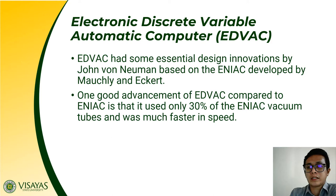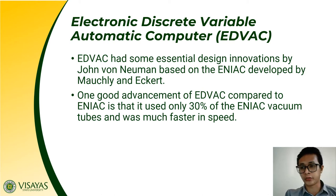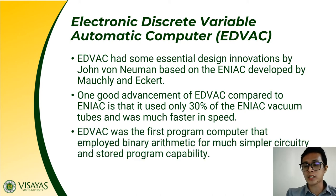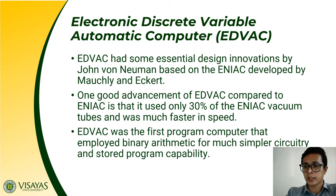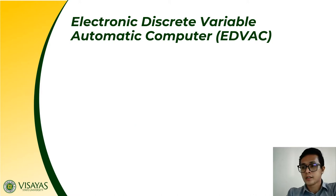This made first-generation computers prone to overheating. Compared to ENIAC, EDVAC was more advanced and faster in speed. It was the first programmed computer which employed binary arithmetic for simpler circuitry and stored program capability. Binary consists of 1s and 0s for simpler circuitry.